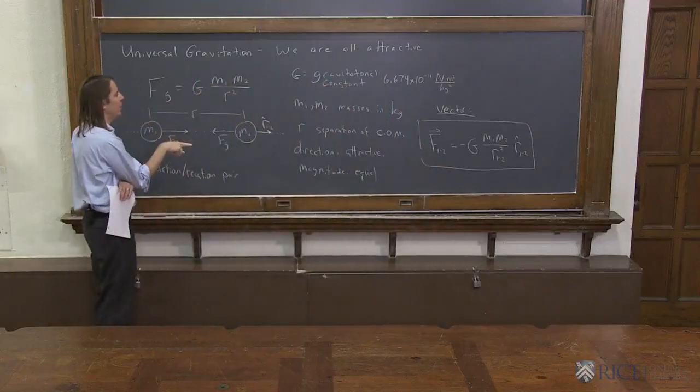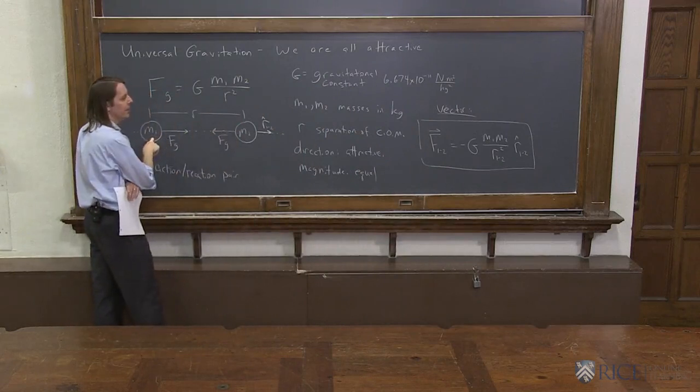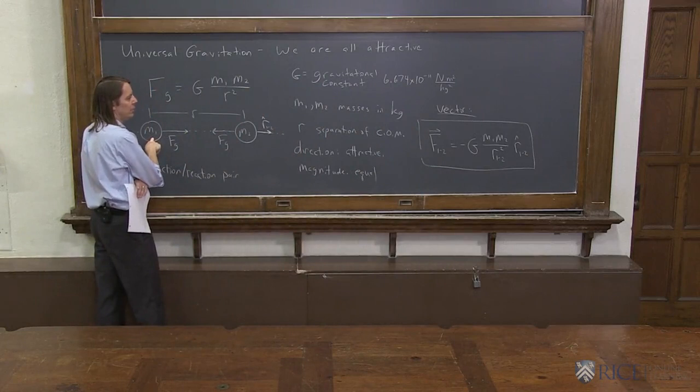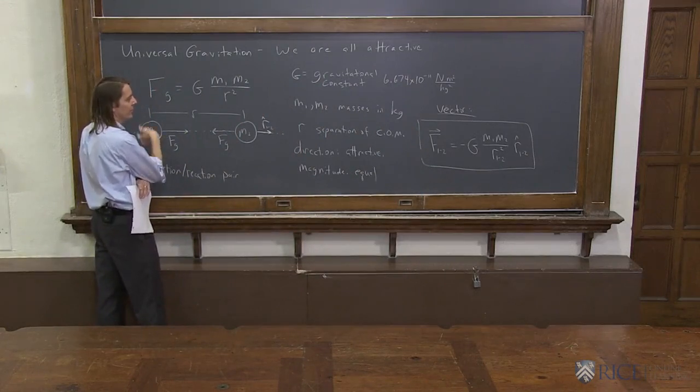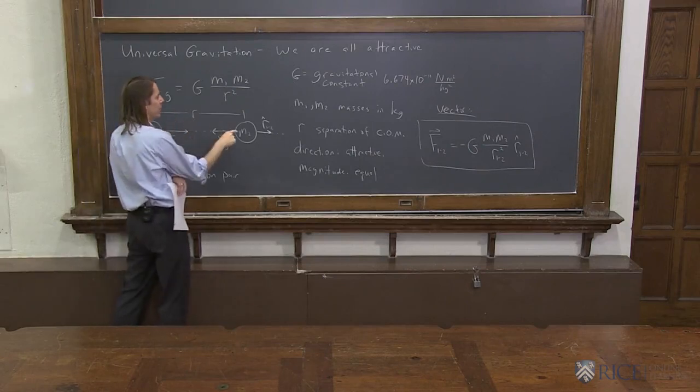And now let's imagine we switched 1 and 2. What if it was F_21? The force that 2 causes 1 to feel. Okay. F_21 would be minus G m_1 m_2 over r_21 squared. That's all the same. But it would be the unit vector r̂_21. Unit vector r̂_21.